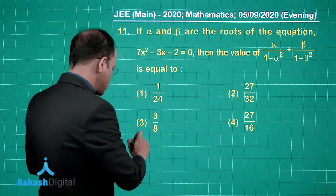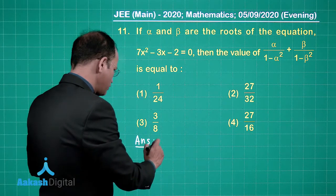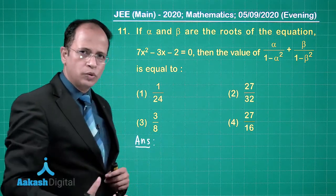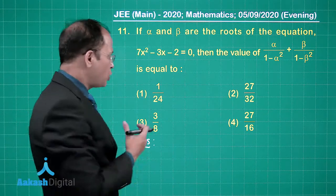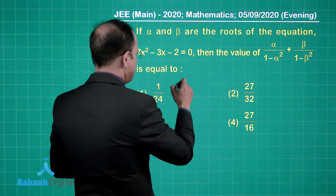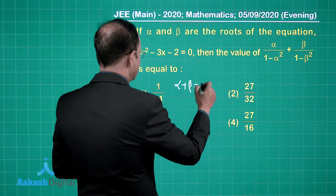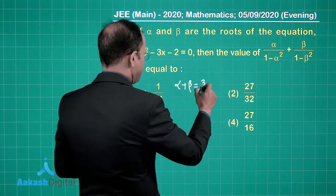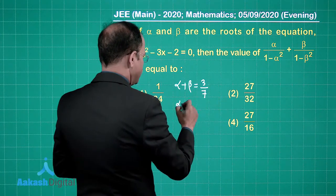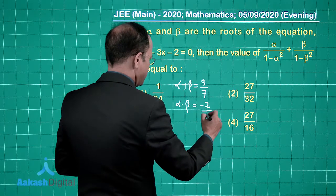Using the sum of roots and product of roots concept, we get alpha plus beta is equal to 3/7, and alpha into beta is equal to -2/7.